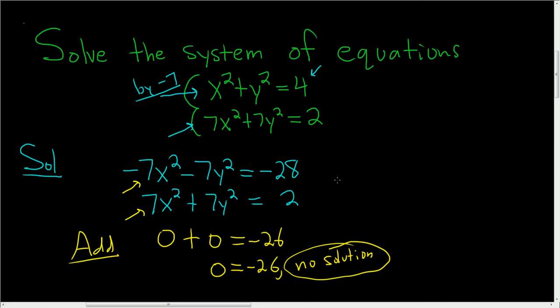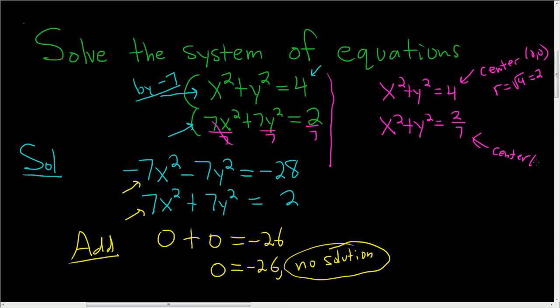Now, the other way to do it is a little bit more clever. So you simply rewrite the first equation and note that this is a circle with center (0,0) and radius equal to the square root of 4, so 2. And dividing this by 7 and rewriting it, you see that this is a circle with center (0,0) and radius the square root of 2/7.